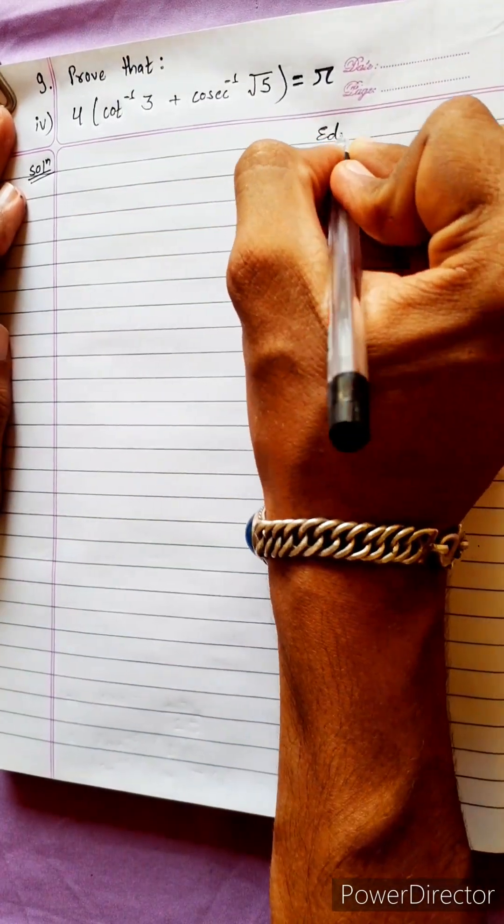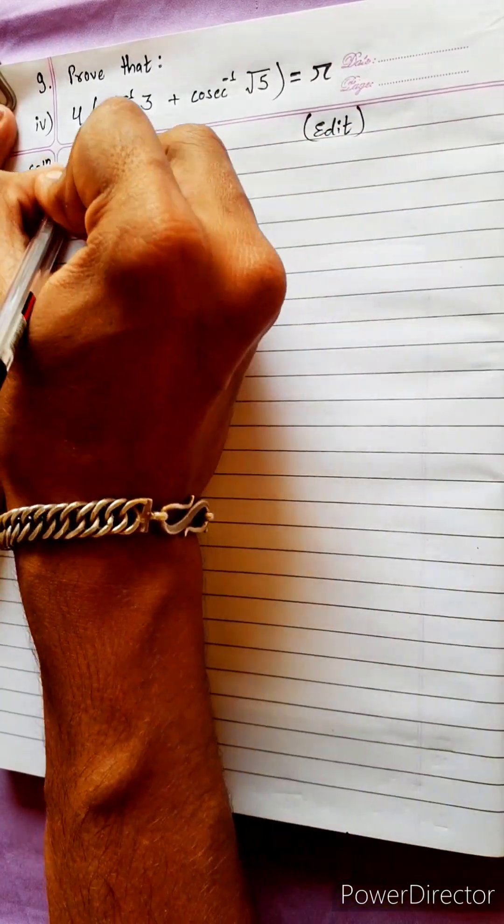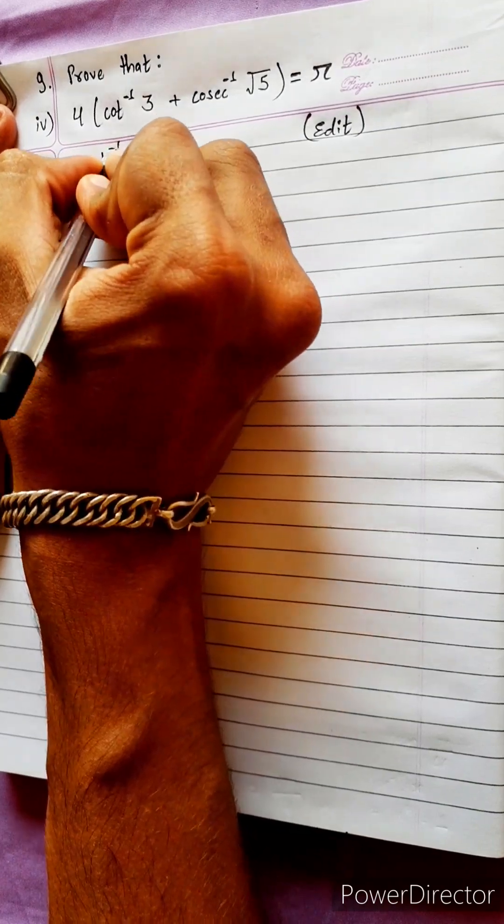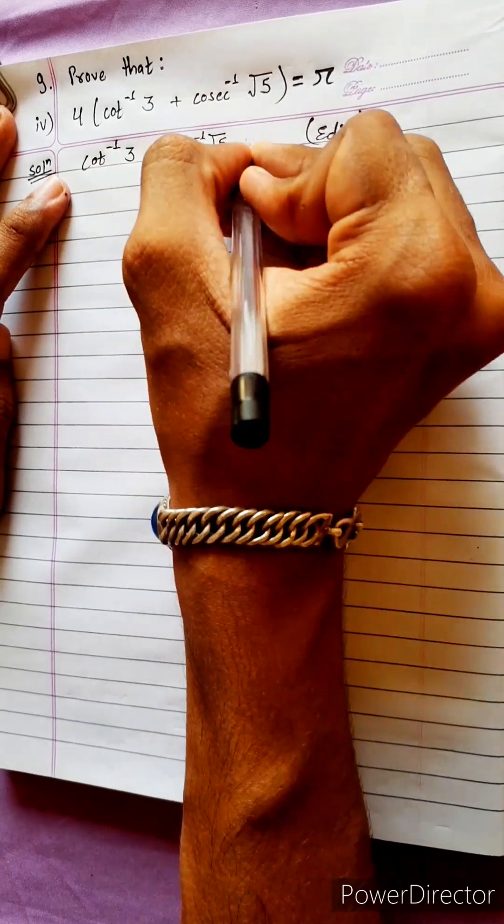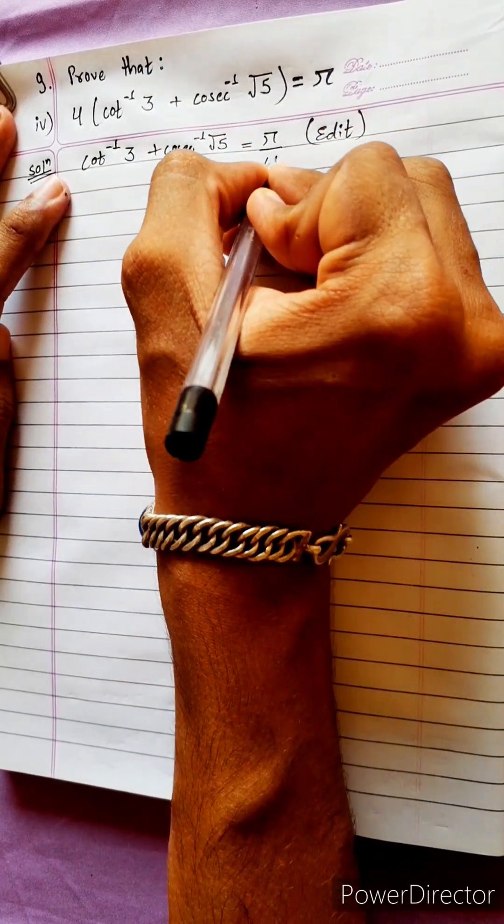This is what we need to edit. We need to modify the question. Cot inverse 3 plus cosec inverse root 5 equals to pi by 4. This is the question.